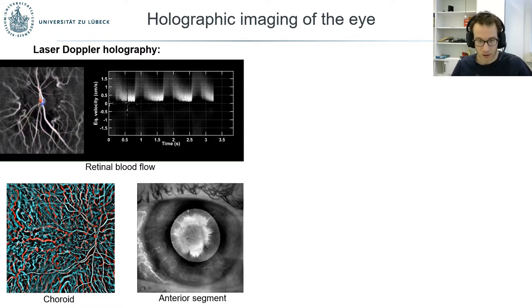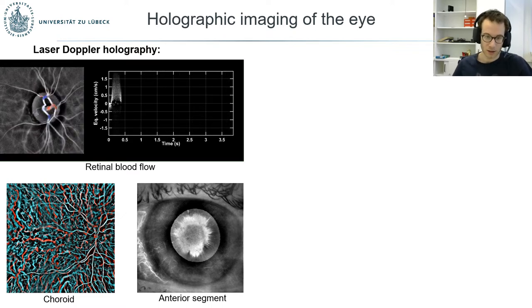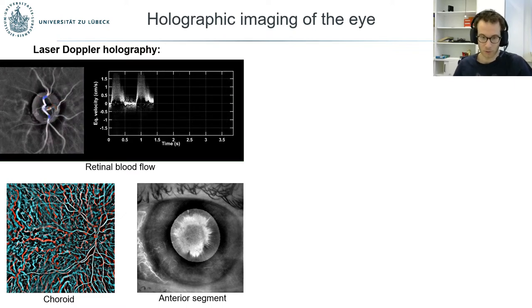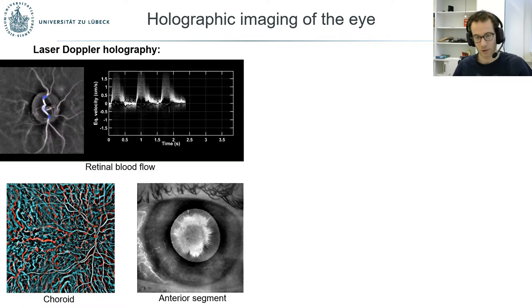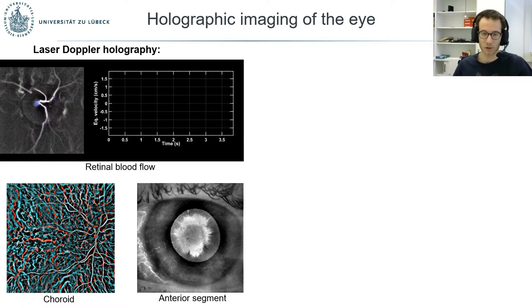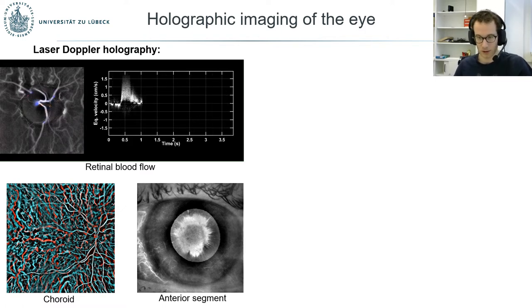In the anterior segment, LDH is capable of revealing blood flow in the vasculatures of the conjunctiva and iris, and it can also reveal problems of transparency of the anterior segment.